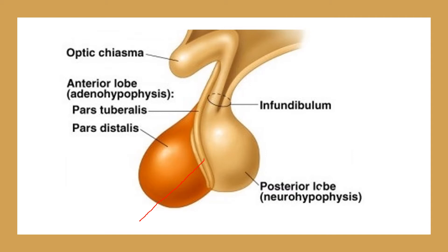So totally three lobes are present: anterior, intermediate, and posterior lobe. The posterior lobe and its subdivisions contain the infundibular part, the median eminence, and the pars nervosa, which is the largest part of the posterior lobe.